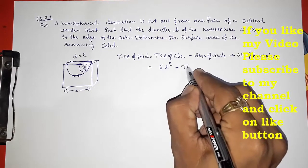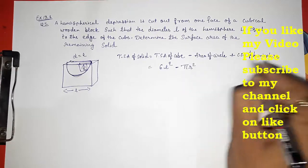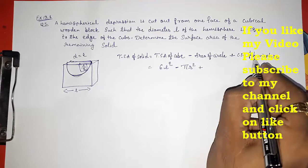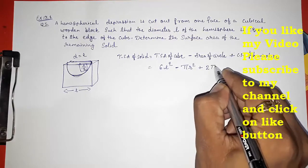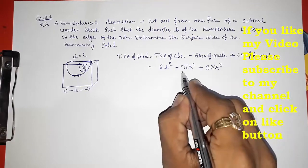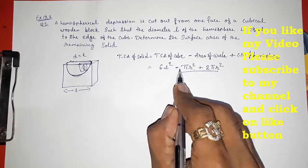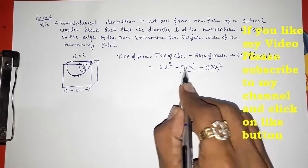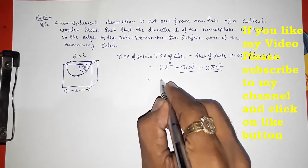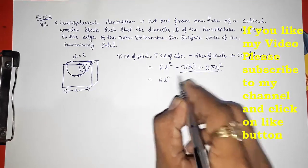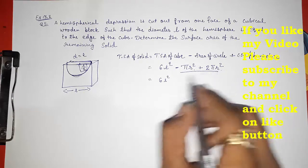First area of circle, so minus πr², plus CSA of hemisphere, that is 2πr². Now look at these two things: minus πr² plus 2πr². This is minus 1 and this is plus 2πr², so directly we can solve that 6L² minus πr² plus 2πr² will be equal to 6L² plus πr².